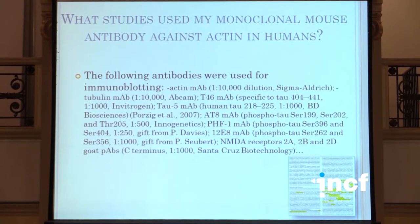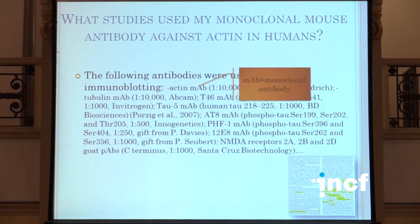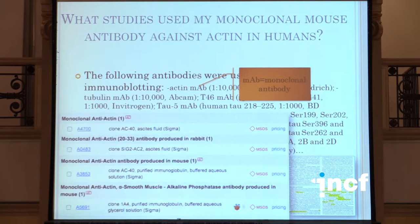Here is a fairly typical paper. There are some antibodies actually pulled out in that tiny bit of the methods section, shown larger here in the main section. Here's an antibody against actin. What I might be asking as a researcher is: what are the studies that are using my particular monoclonal mouse antibody? There it is — I found it in that particular paper.